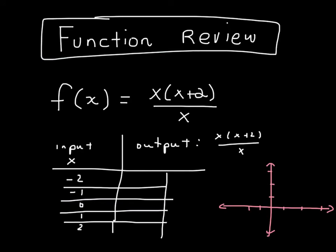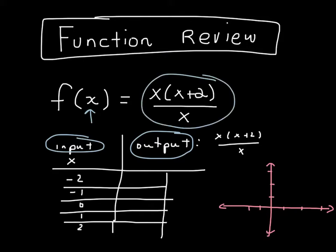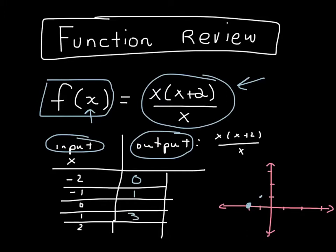Just a little review of functions: we have some input x and some output, which is our function f of x. When x is negative 2, we get 0, and we could plot that on our graph. When x is negative 1, we get 1. When x equals 1, we get 3. And when x is 2, we get 4. So this looks like a straight line.